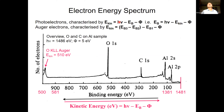Modern analysers combine the hemisphere with an electrostatic lens in front that also acts as a retarding field. We always use the same pass energy, but reduce the energy of incoming electrons by applying a voltage across this lens, allowing convenient scanning of the kinetic energy range. This setup gives us a well-defined photon energy and a means of measuring the intensity of photoelectrons as a function of kinetic energy.